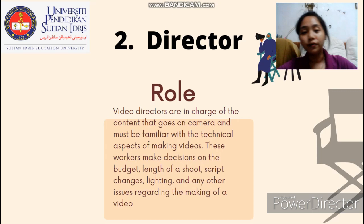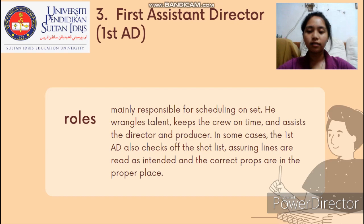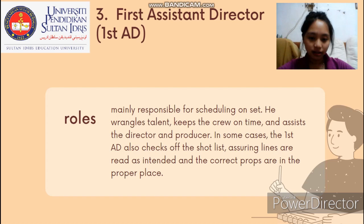The next one is the first assistant director. The role of the first AD is mainly responsible for scheduling on set. They wrangle talent, keep the crew on time, and assist the director and producer. In some cases, the first AD also checks off the shoot list, ensuring lines are read as intended and the correct props are in the proper place.